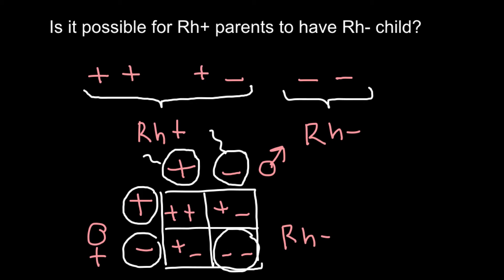As you see, one quarter of the progeny would be Rh negative, and three quarters would have a progeny that is going to be Rh positive. So this is very simple Mendelian genetics, and yes — two parents who are Rh positive may have an Rh negative child.